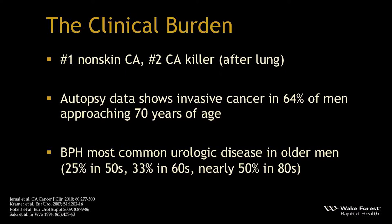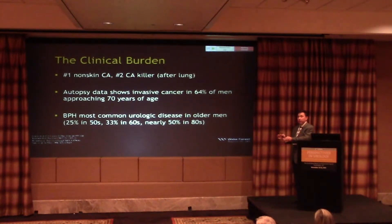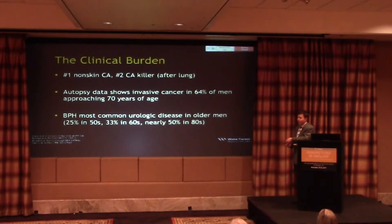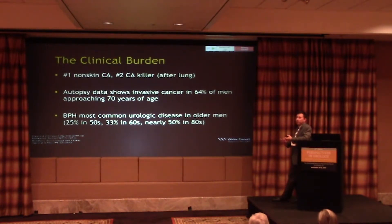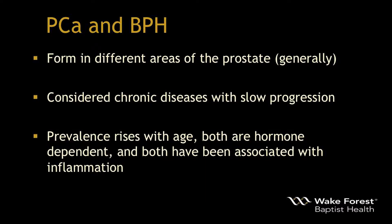In terms of the most diseased organ: prostate cancer is the number one non-skin cancer and the number two cancer killer in men after lung disease. Autopsy studies at Wayne State demonstrated invasive cancer in 64 percent of men approaching 70 years of age, with prevalence rising by decade, leading to the comment that if we live long enough we all get prostate cancer. BPH is the most common urologic disease in older men, with nearly 50 percent of men in their 80s having BPH.